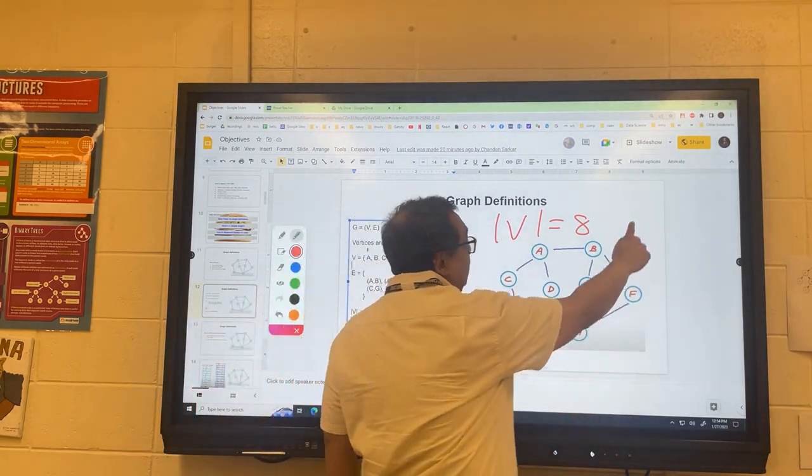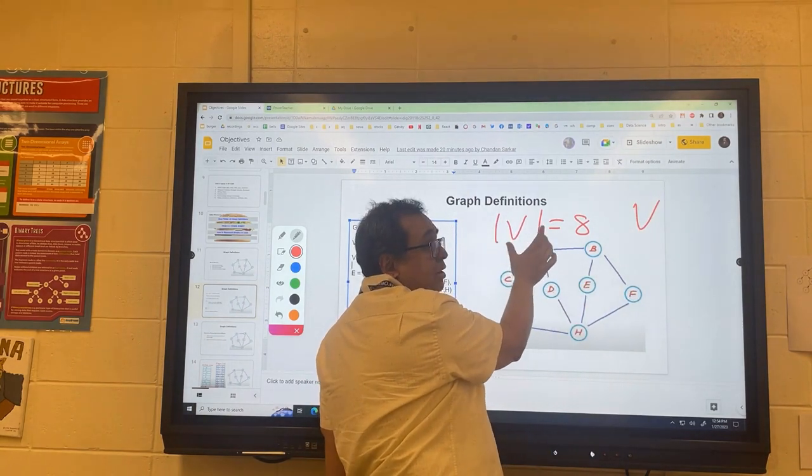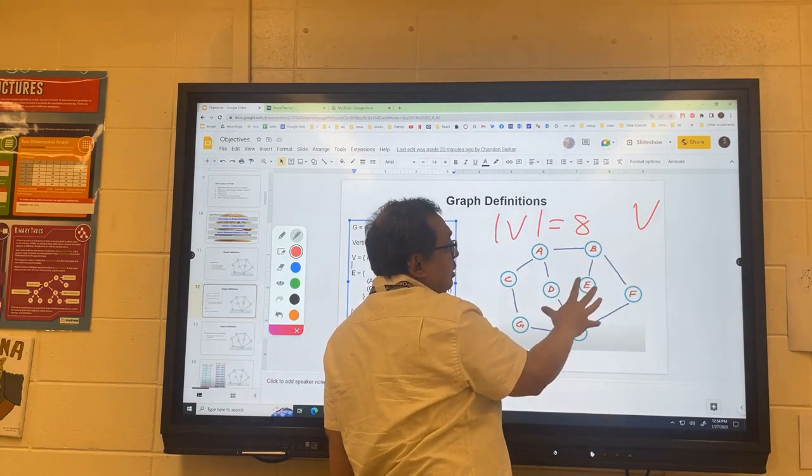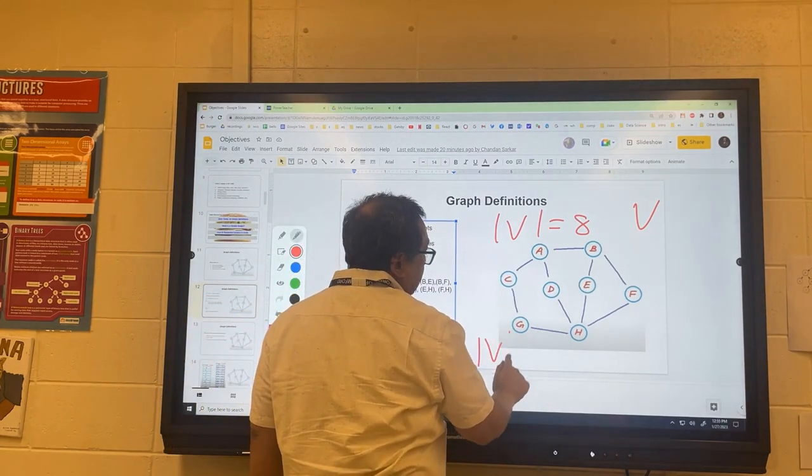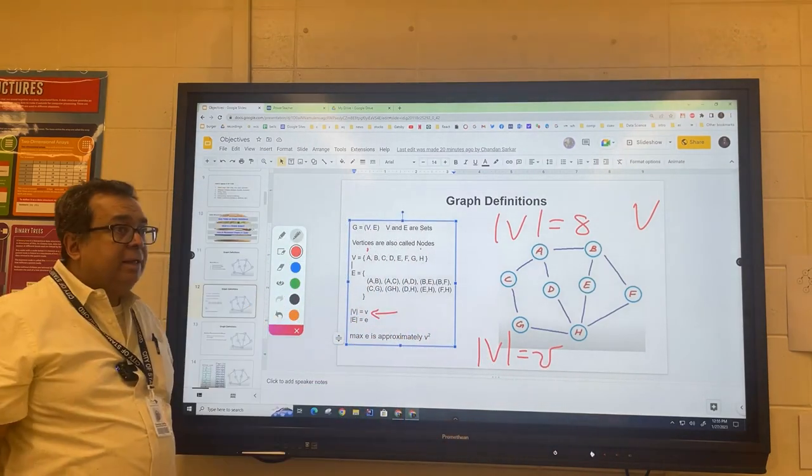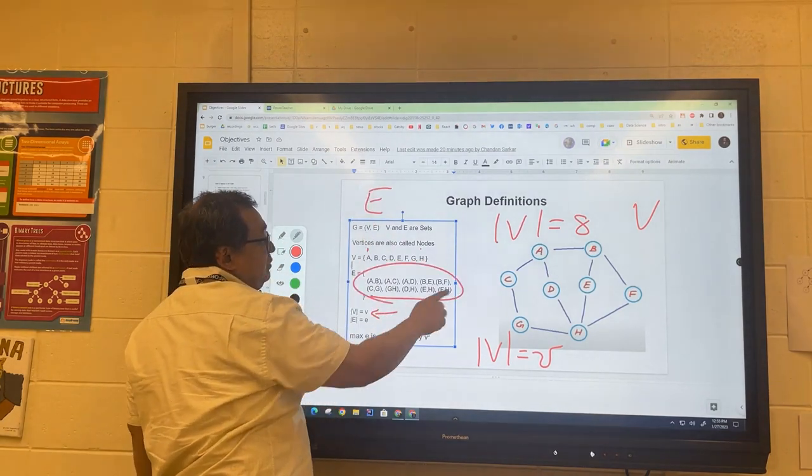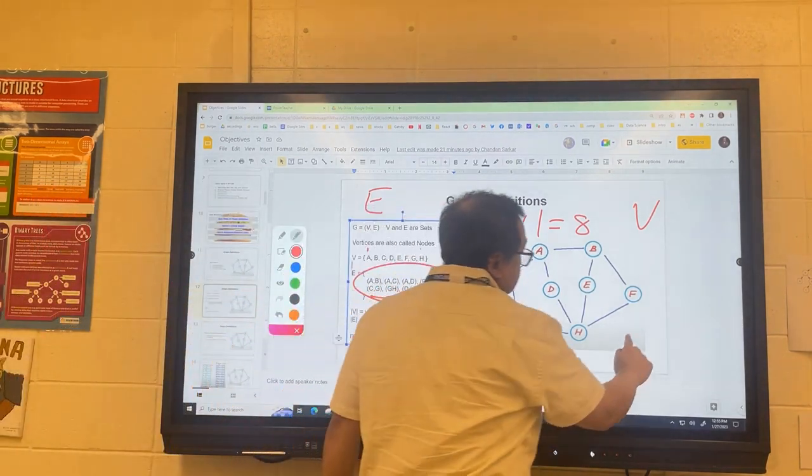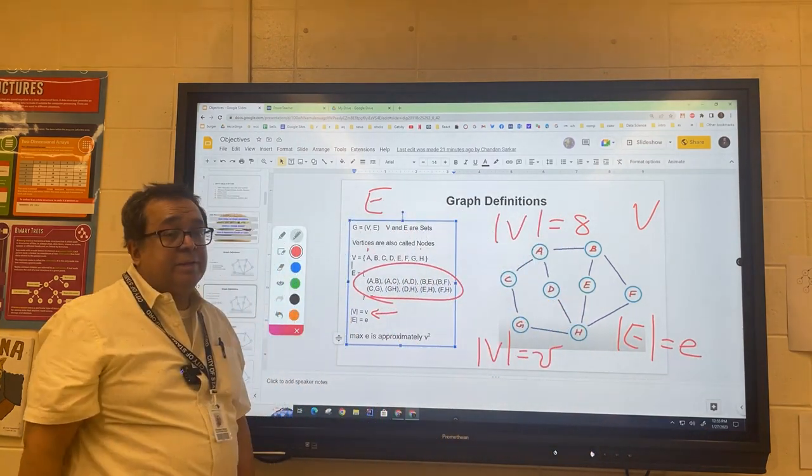So here it's saying that the number of vertices is eight. Try to understand that the capital V is a set of vertices themselves, and when we put these bars here we're basically saying what is the magnitude or how many are there. We often represent this capital V in shortcut with the little v. Likewise E represents the edges. If I wanted to know how many edges there were, I would use this symbol here, and that is going to be denoted by the little e.